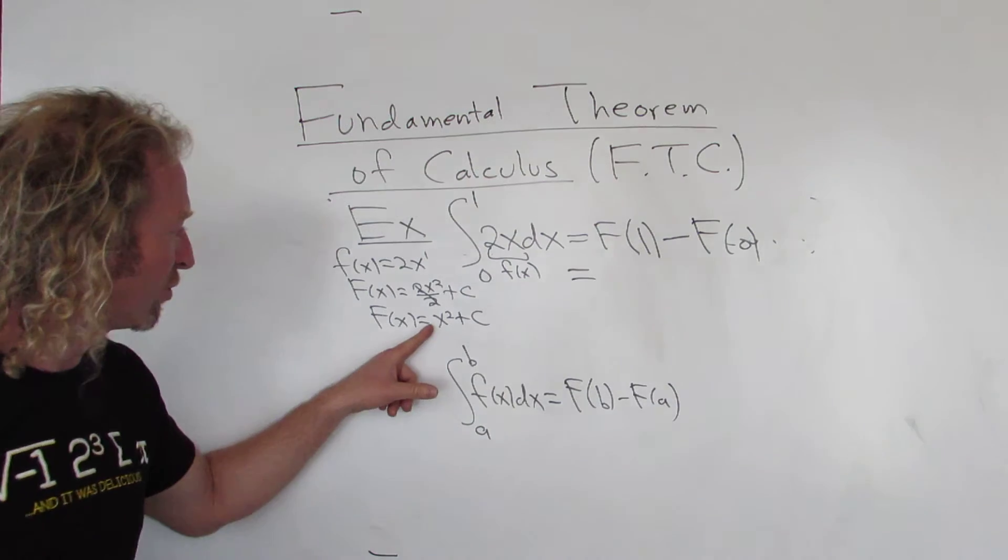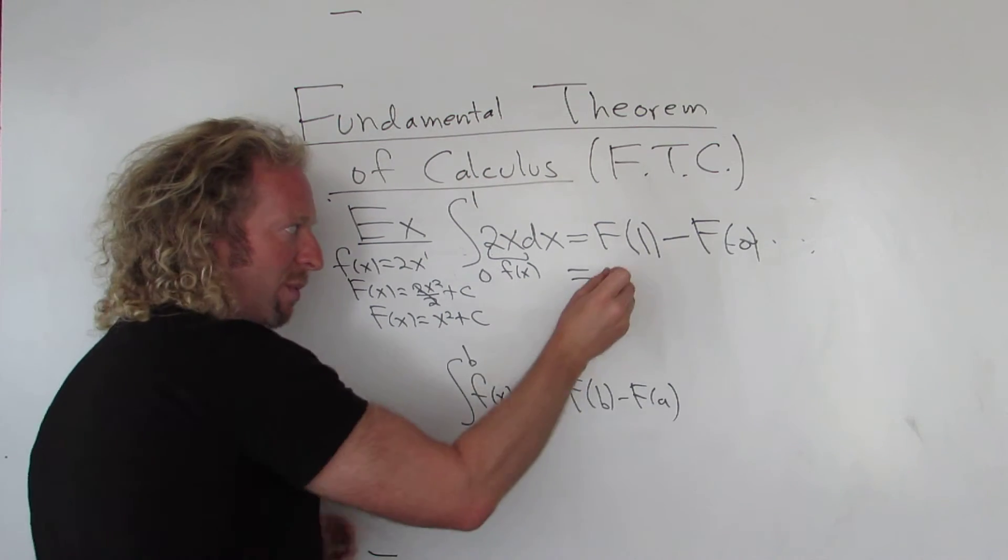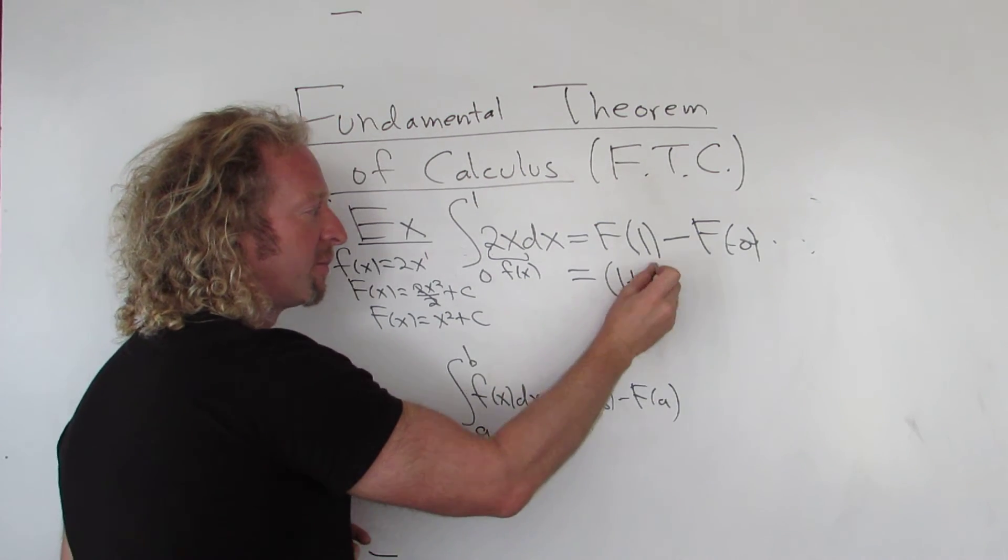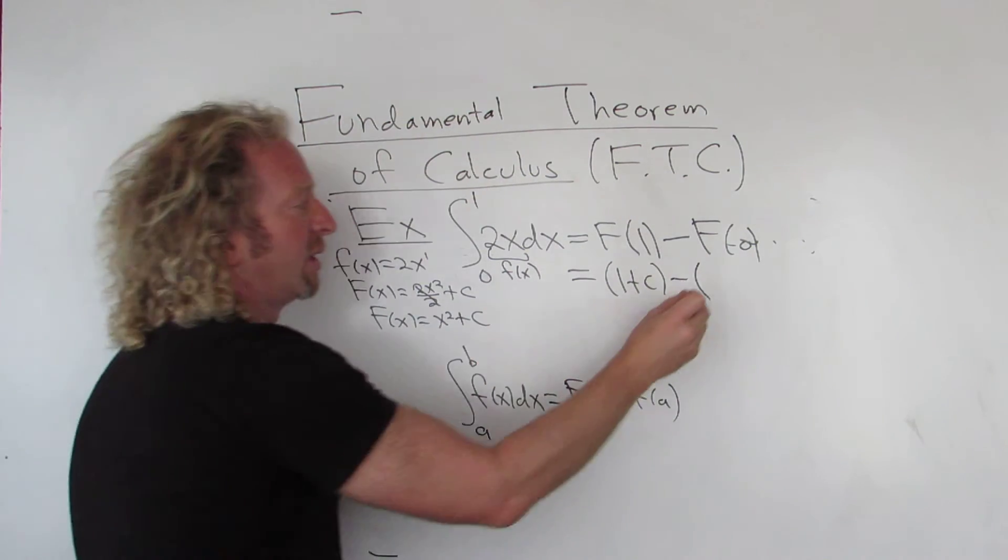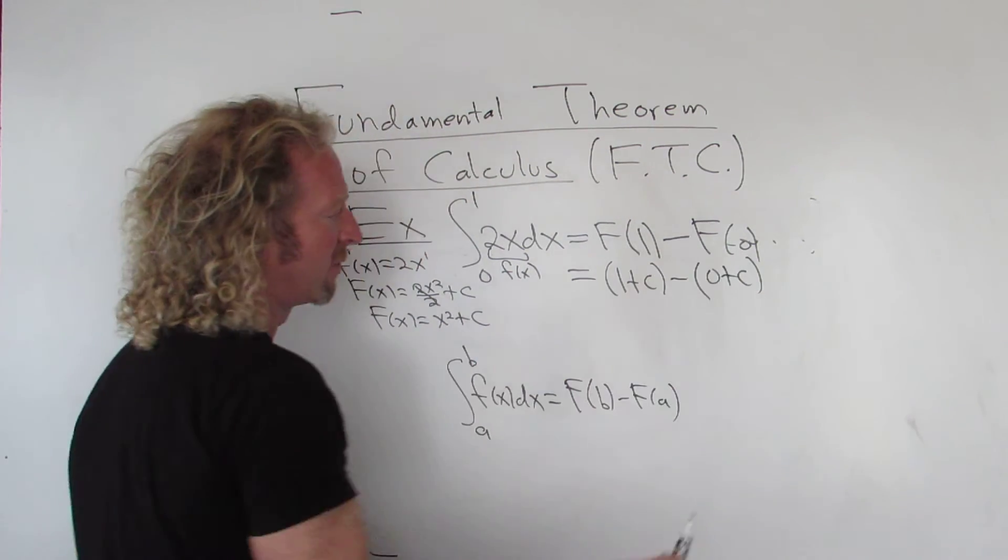Then you would plug in the numbers. So you would get 1 squared plus c, or just 1 plus c. So 1 plus c, minus, and then 0 plus c, 0 plus c.